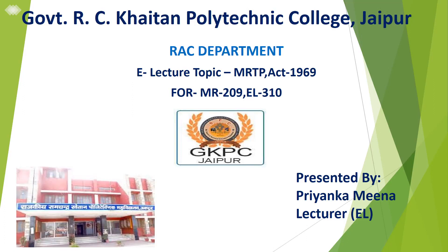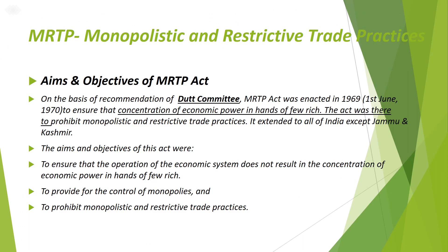Hello everyone. Today we will discuss about the topic MRTP Act 1969. MRTP means Monopolistic and Restrictive Trade Practices. MRTP Act 1969 was effective on June 1970. On the basis of recommendation of Dutt Committee, MRTP Act was enacted in 1969 to ensure that concentration of economic power in hands of few rich is controlled. The Act was there to prohibit monopolistic and restrictive trade practices. It applied to all of India except Jammu and Kashmir.